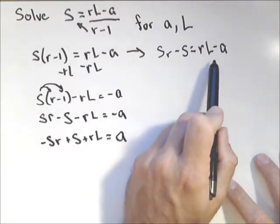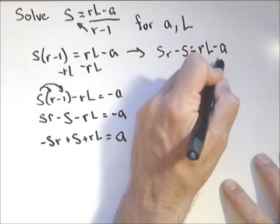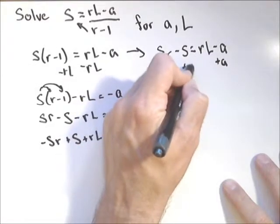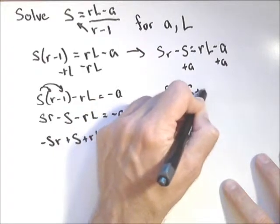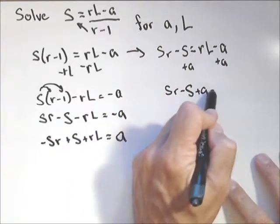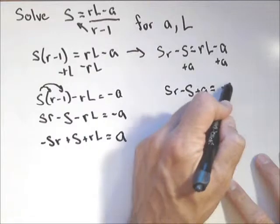First thing I'm gonna do is add A to both sides. And I have SR minus S plus A equals r L.